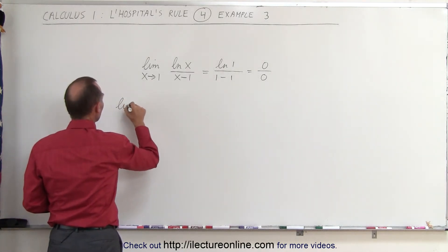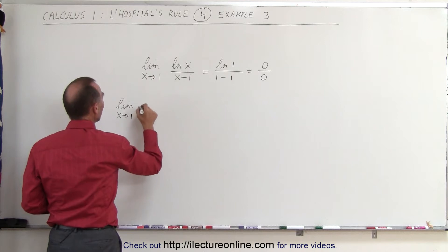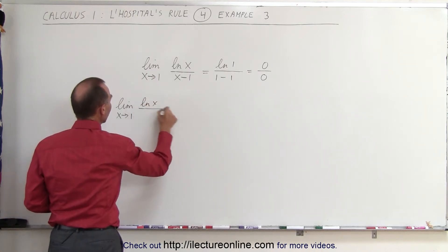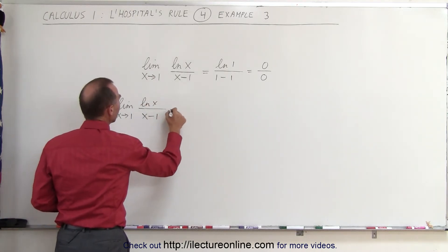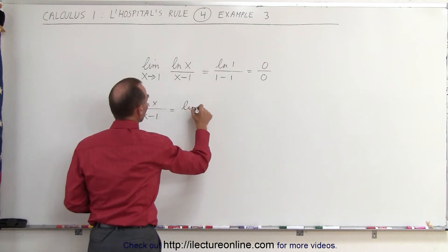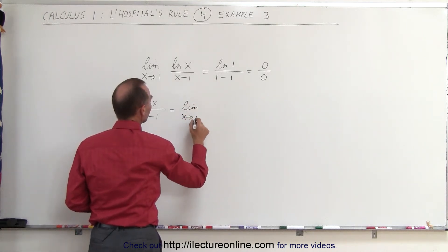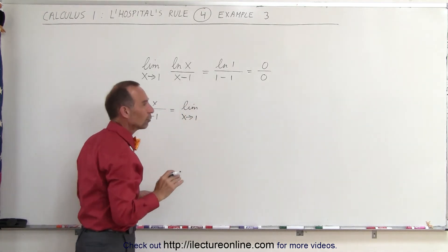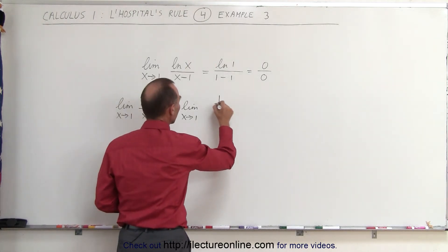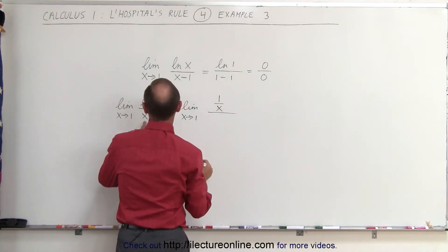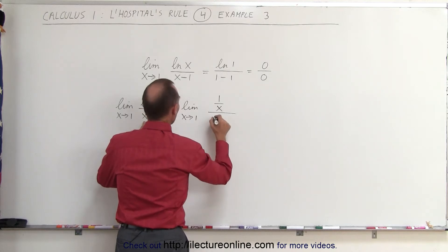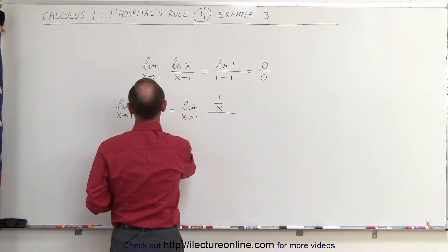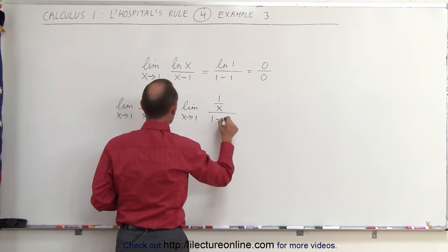So we should be able to say that the limit as x approaches 1 of the natural log of x divided by x minus 1 is equal to the limit as x approaches 1 of the derivative of the numerator. So the derivative of the natural log of x is 1 over x divided by the derivative of the denominator which would be the derivative of x that would be equal to 1 minus 1.